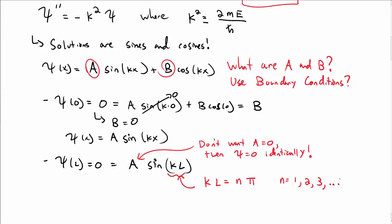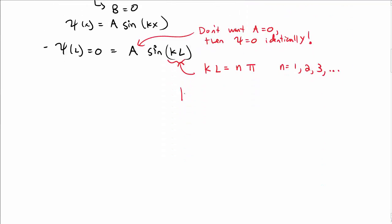Like n = 1, 2, 3, etc. Rearranging that, I can write k = nπ/L, so that's a k that depends on n.